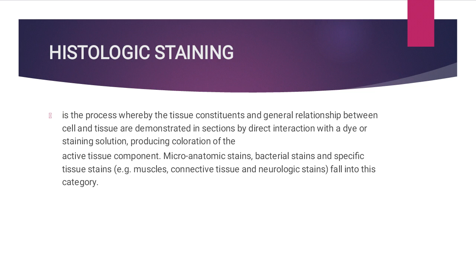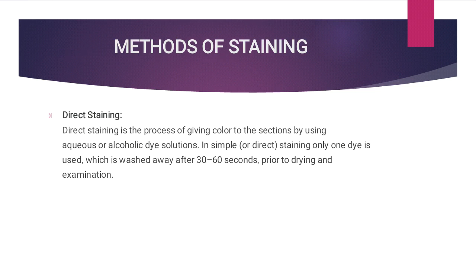It is important to remember that the color of the stains are not the real color of a particular tissue, and that a structure appearing as one color using one stain may be quite a different color using another stain. The first method of staining is direct staining, which is the process of giving color to sections by using aqueous or alcoholic dye solutions.